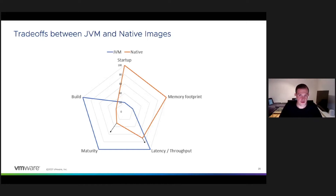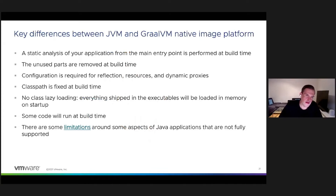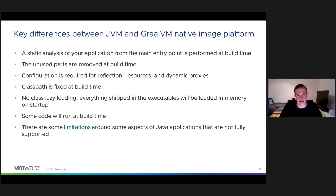The key differences between a regular JVM and the Native Image platform are: static analysis of your application from the main entry point is performed at build time and unused parts are removed; upfront configuration is required for reflection, resources, and dynamic proxies; the classpath is fixed at build time; class loading is not possible; and some code will run at build time. Let's now look at how you can get started with GraalVM native images for your Spring Boot application.